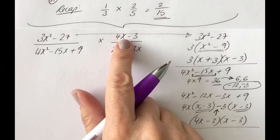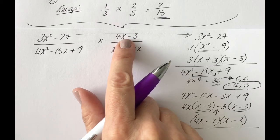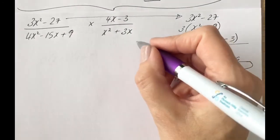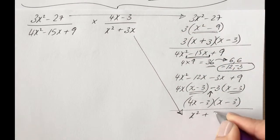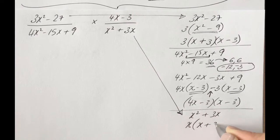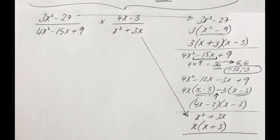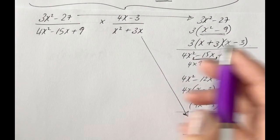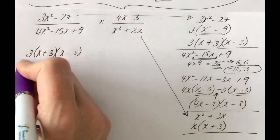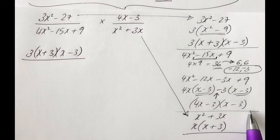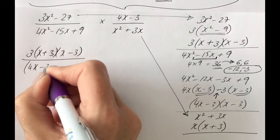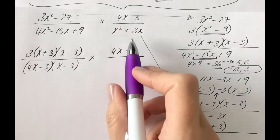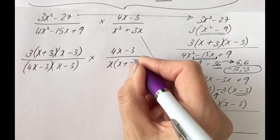The numerator on the right-hand side is 4x minus 3 — there's nothing more we can factorize there, so it stays as is. The denominator on the right-hand side is x squared plus 3x. Pulling out the common factor x, we get x(x plus 3). Now that we've factorized everything, let's put them all back together. The expression becomes: 3(x plus 3)(x minus 3) over (4x minus 3)(x minus 3), multiplied by (4x minus 3) over x(x plus 3).